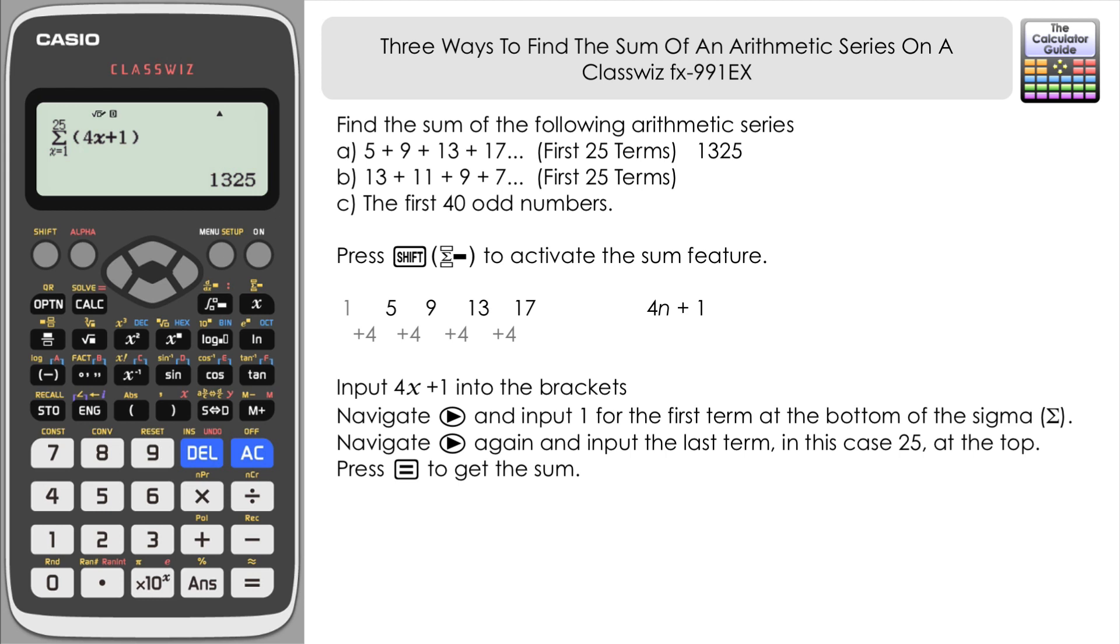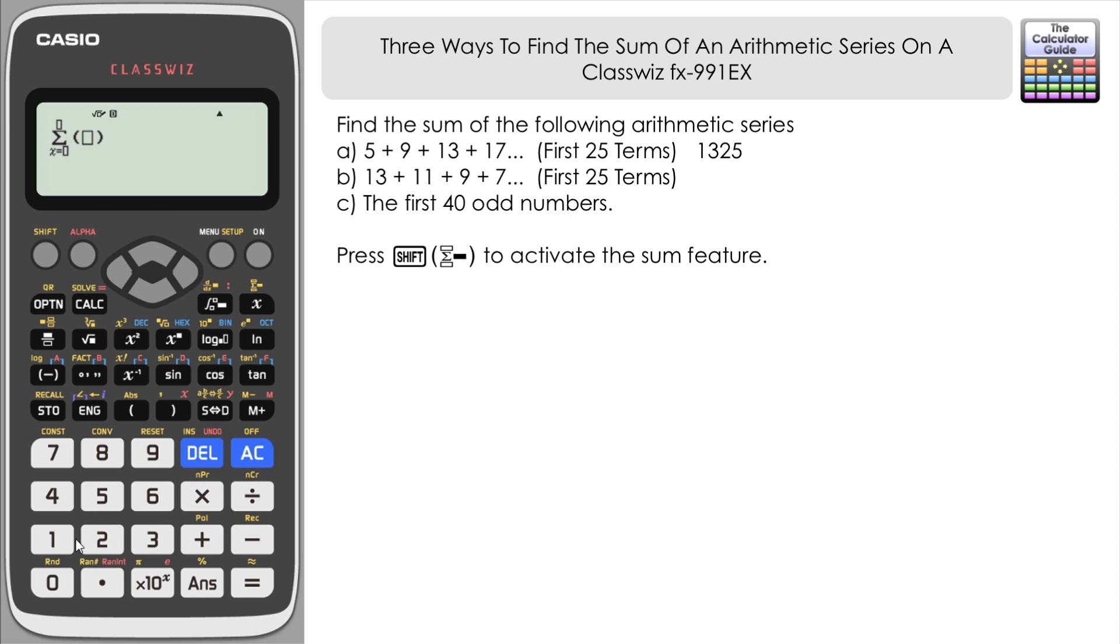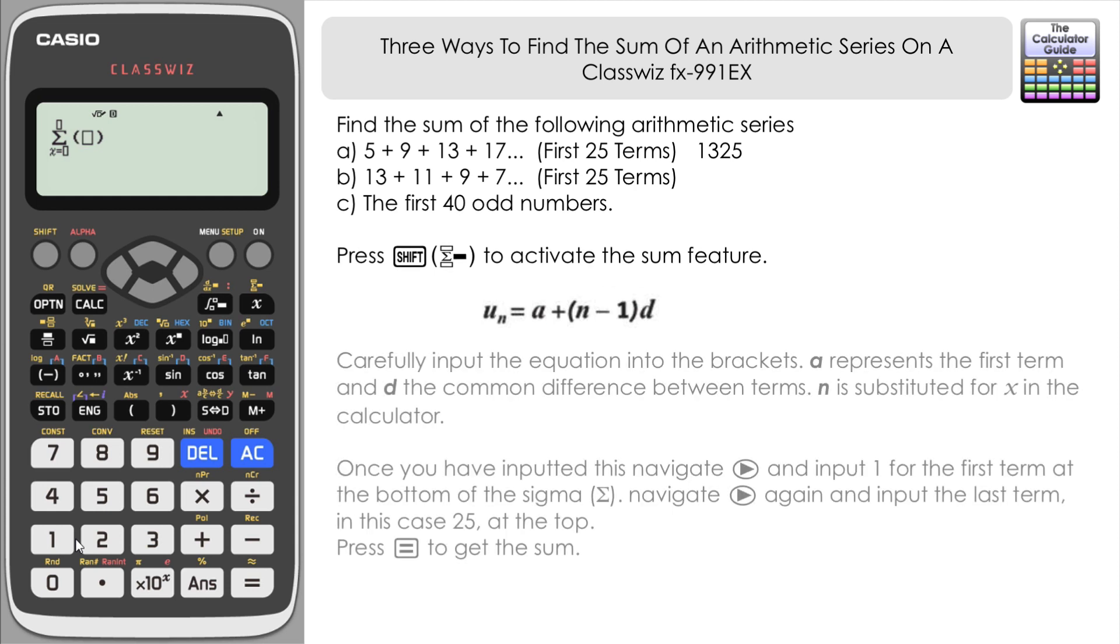Looking at the second series: 13 + 11 + 9 + 7 and so on. Again, we'll use the sum feature with sigma notation. This time we'll use a different variation of the nth term equation that you might learn at A-level: uₙ = a + (n-1)d. It's the same equation in a different form. We want the first 25 terms.